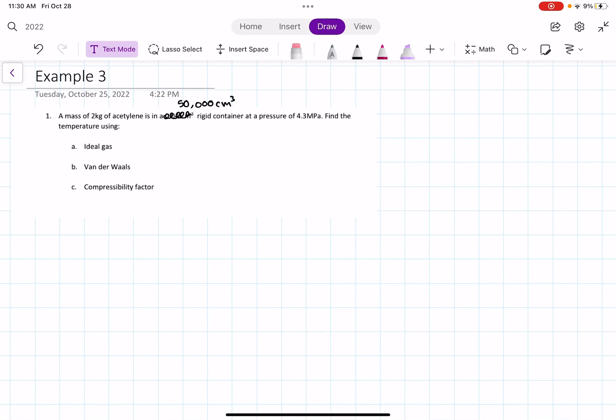In this video, we are going to solve a thermodynamics problem using the ideal gas equation and the Van der Waals equation of state. Let's get started with example 3. A mass of 2 kilograms of acetylene is in a 50,000 centimeters cubed rigid container at a pressure of 4.3 megapascals.